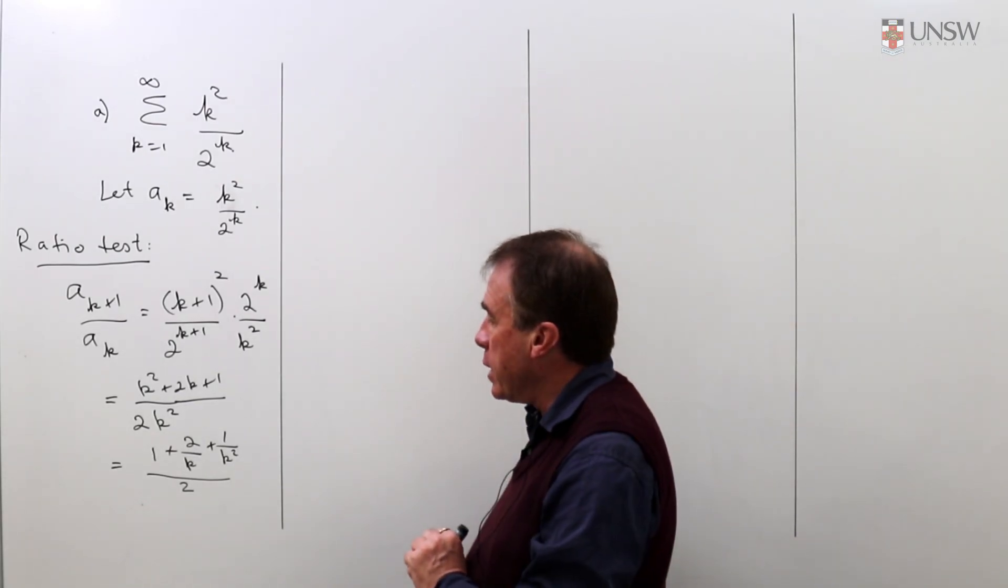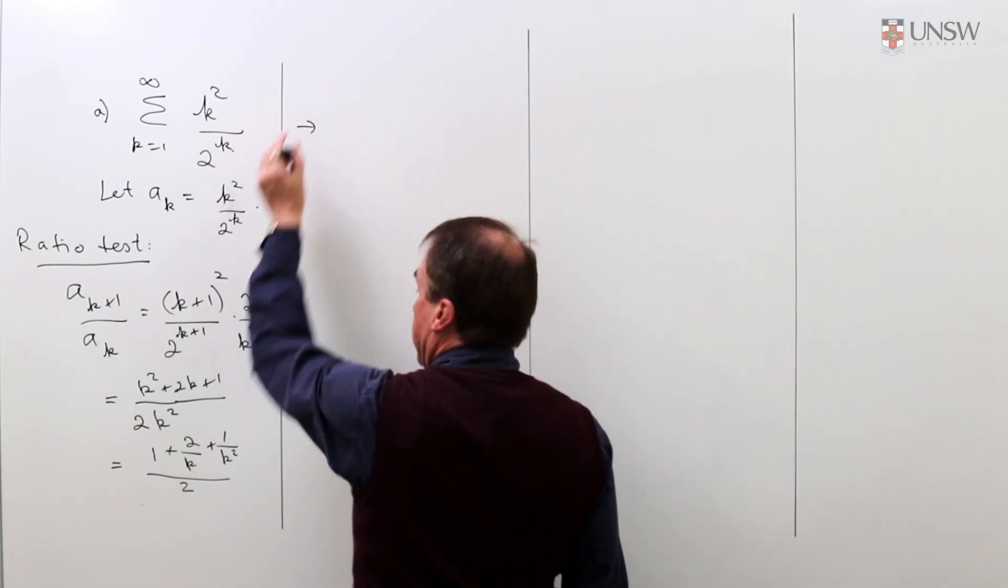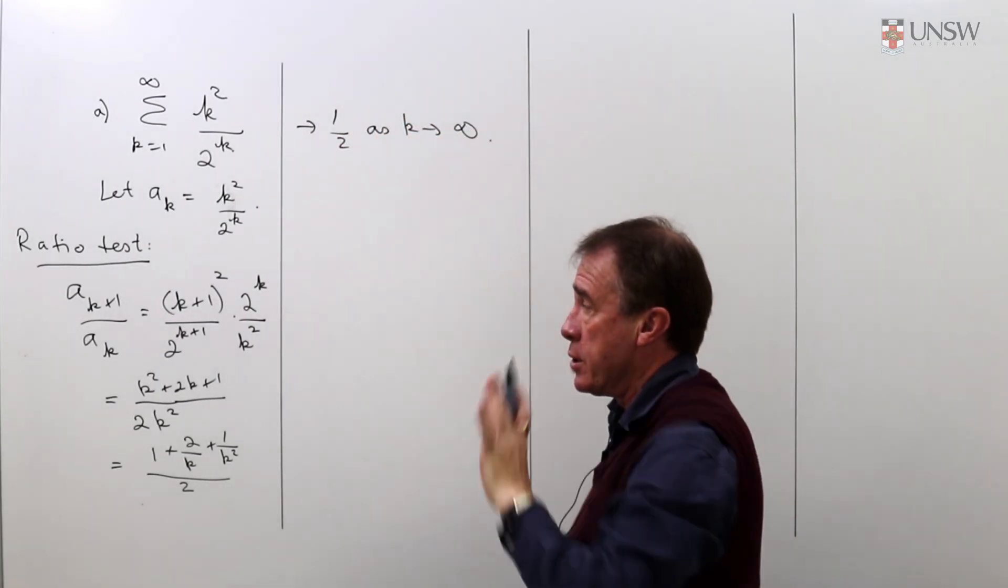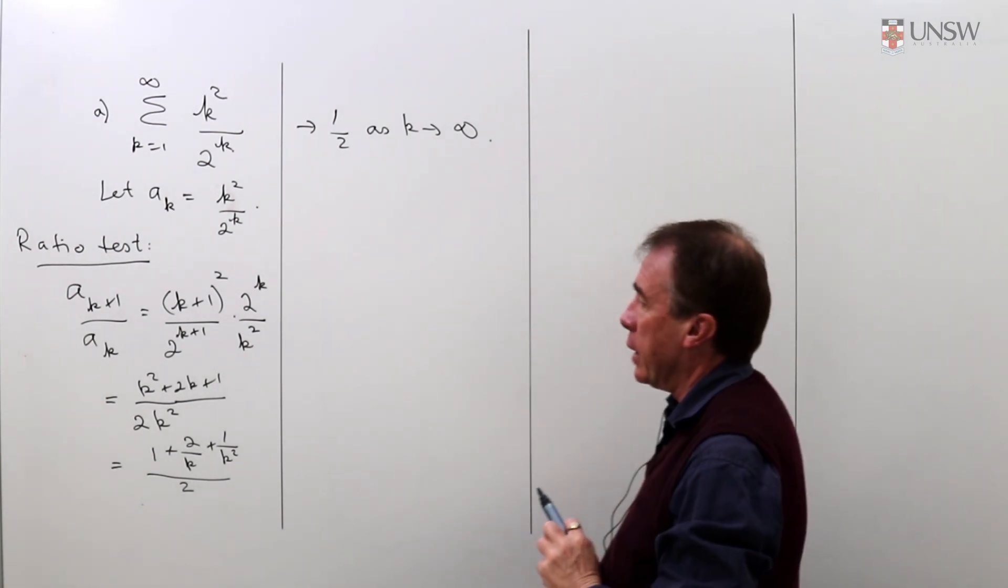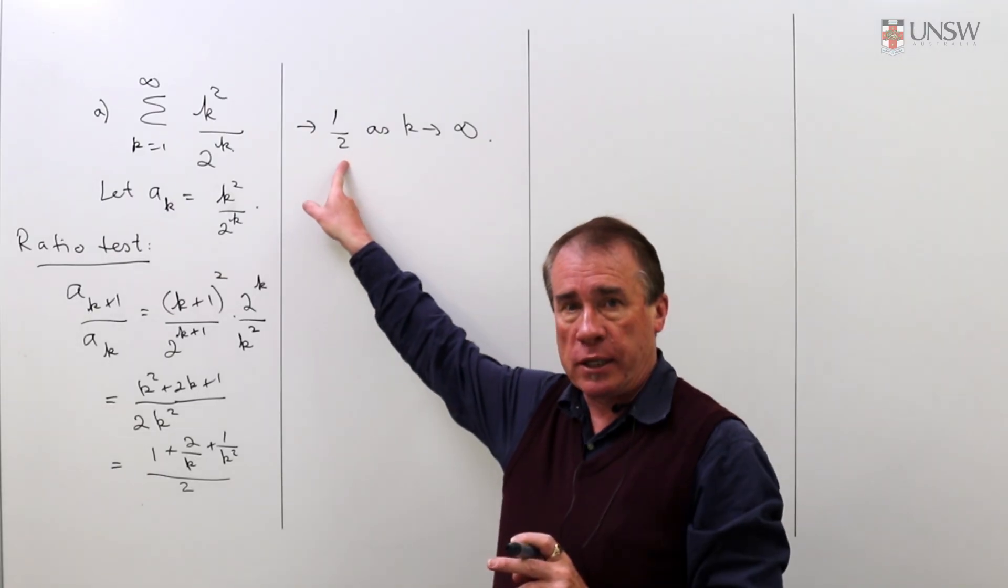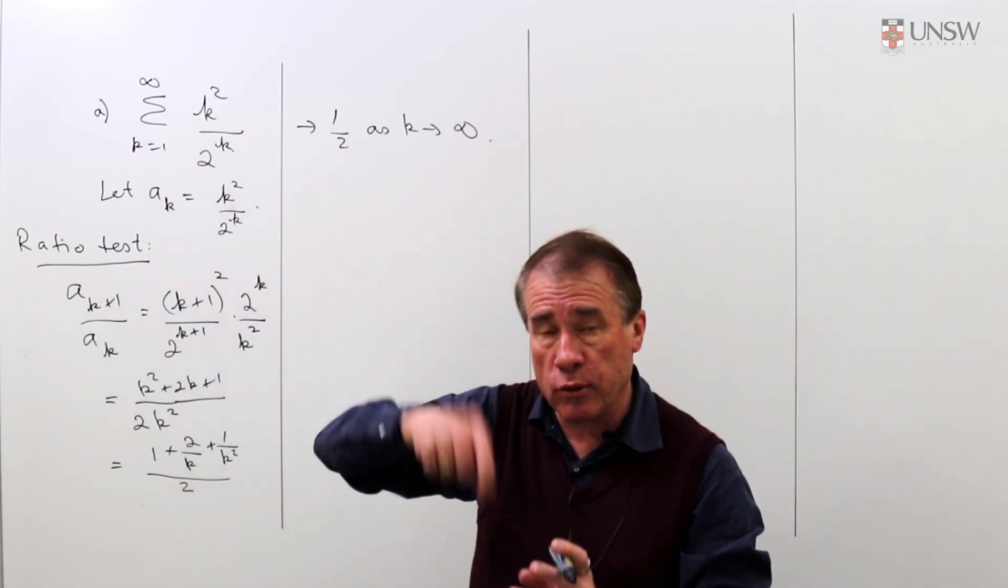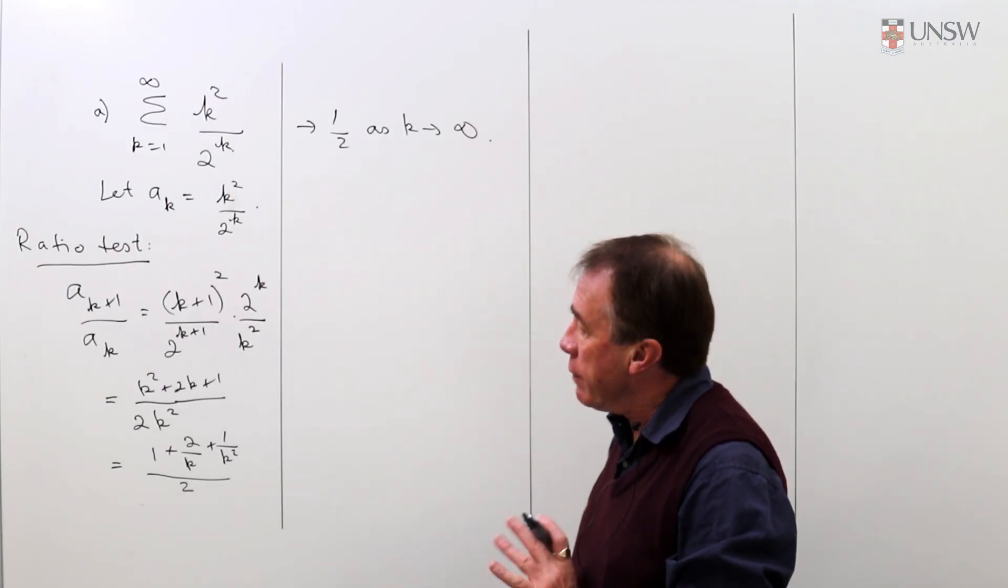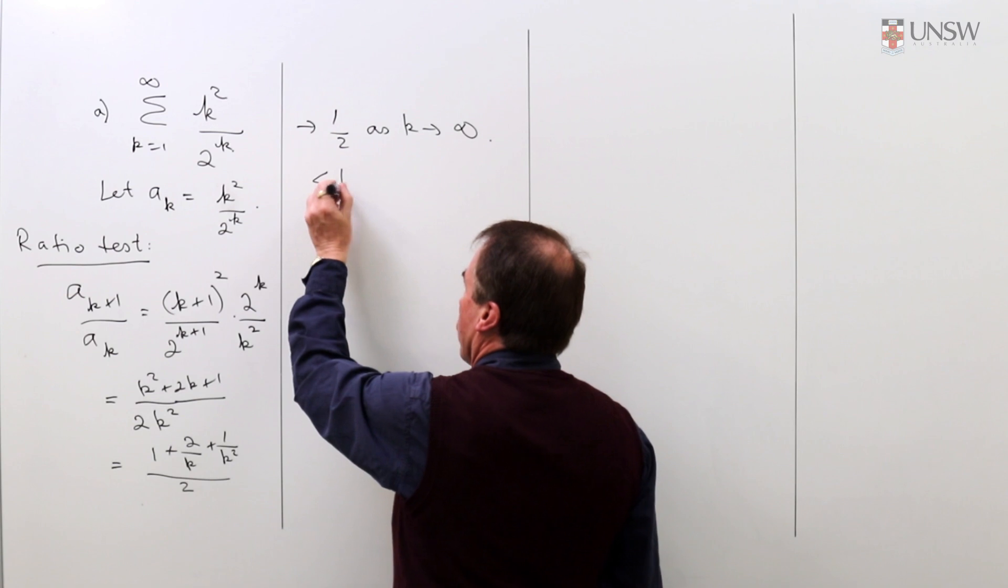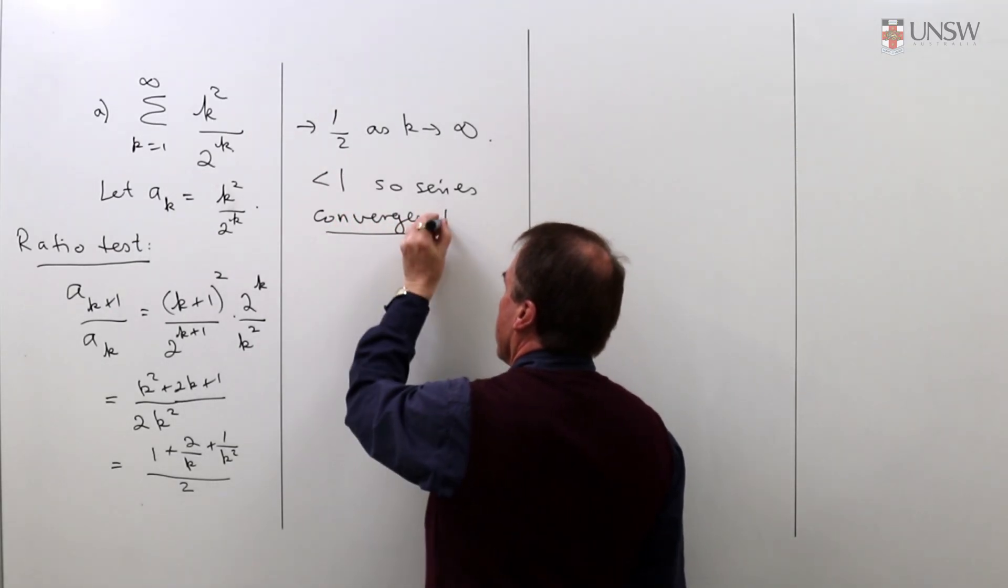The next step is to see what is happening to this as k gets very large. We take a limit as k goes to infinity, those terms go to 0 so I get a half. Once you've got the limit of the ratio, the test says that if this number in absolute value is less than 1 then the series converges, if it's bigger than 1 then the series diverges, and if the ratio equals 1 the test doesn't work. This one is a half which is less than 1, so the series converges by the ratio test.